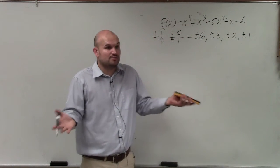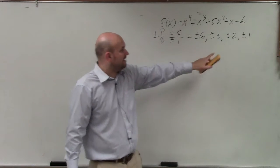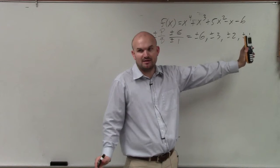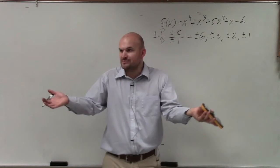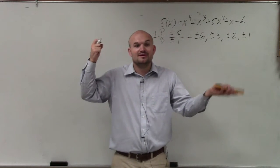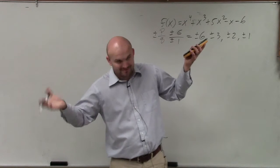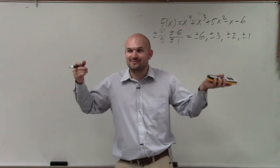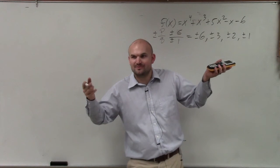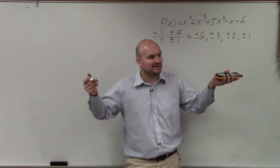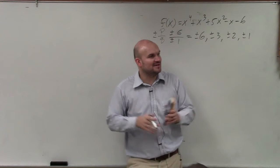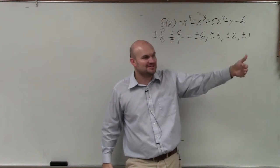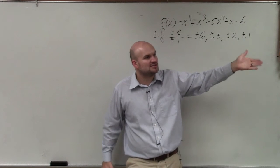If you don't have a calculator and you don't know which ones work, then you just have to start at positive 1, then go to negative 1, and do 2, and do negative 2. And how can you check? There's two different ways we talked about: you could either do the division, or you could use the remainder theorem. If the remainder is 0, by the factor theorem, that tells you it's a zero, or it's a factor.